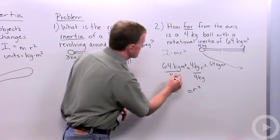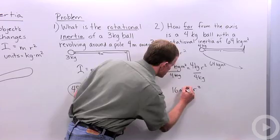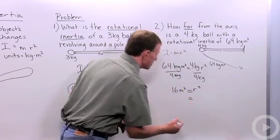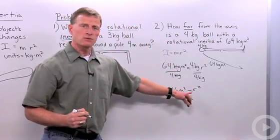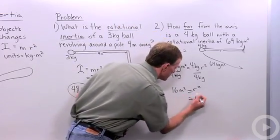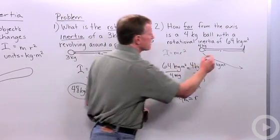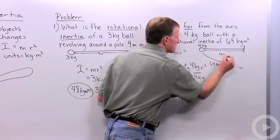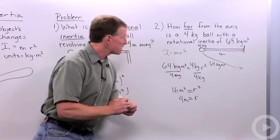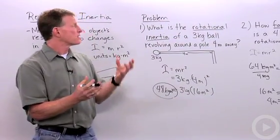I get meters squared. Well, 16 meters squared is equal to what meters? So my r for this, if I simplify that, r equals 4 meters. So in this case, r is 4 meters. This is how you could solve two different types of problems involving rotational inertia.